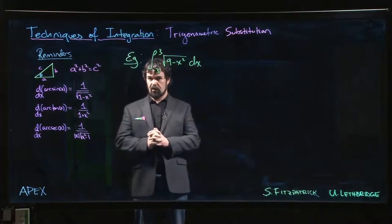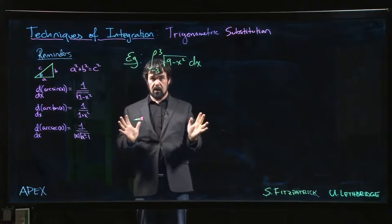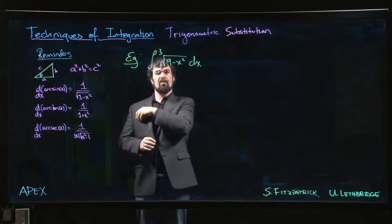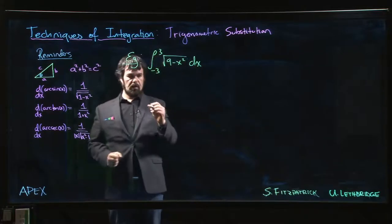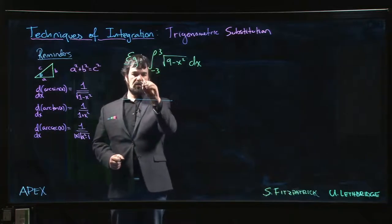Alright, so here's our first example involving trigonometric substitution. This one happens to be a definite integral, so we're going to have to pay attention to the bounds when we substitute. But we'll start with this one. The reason why this is a good one to start with is we know what the answer should be.